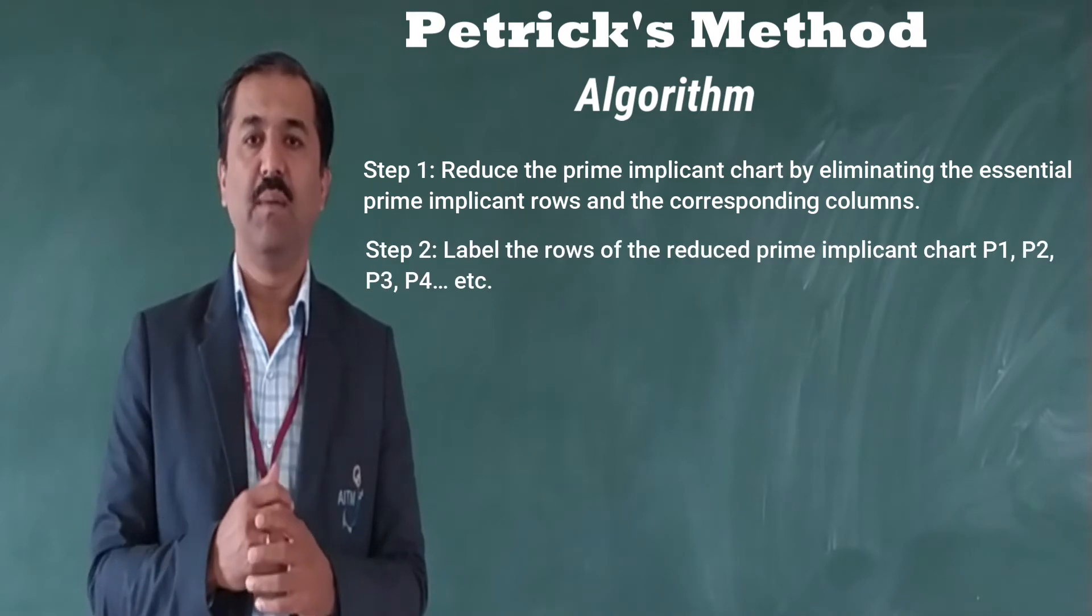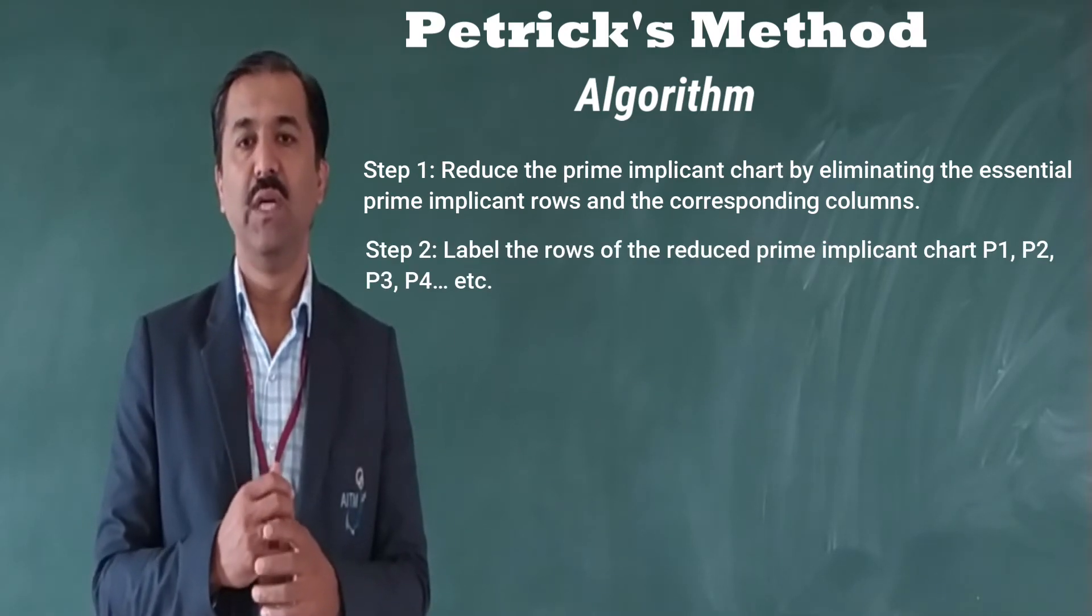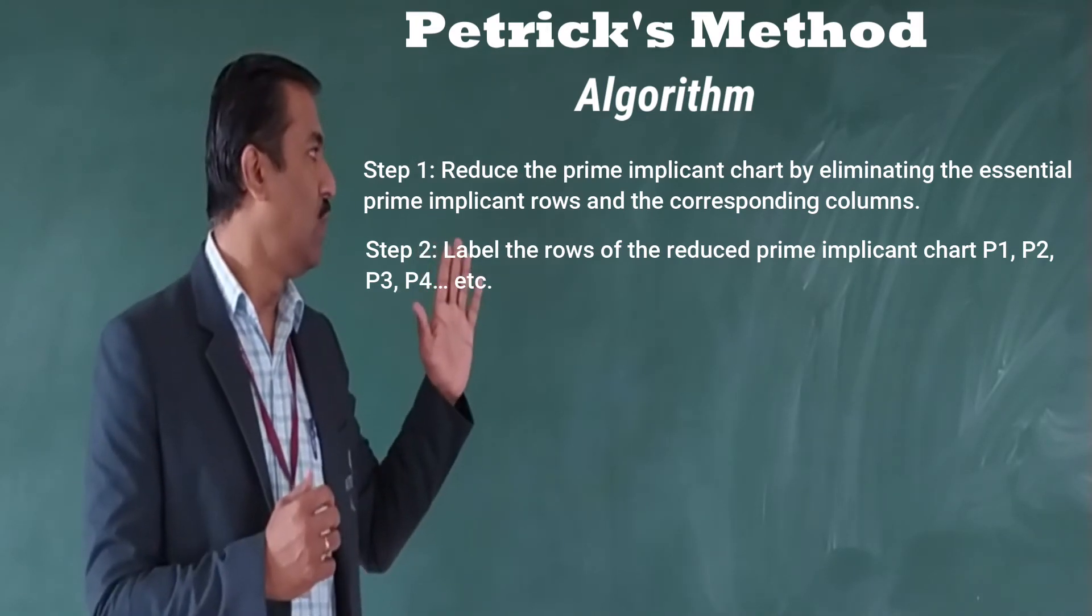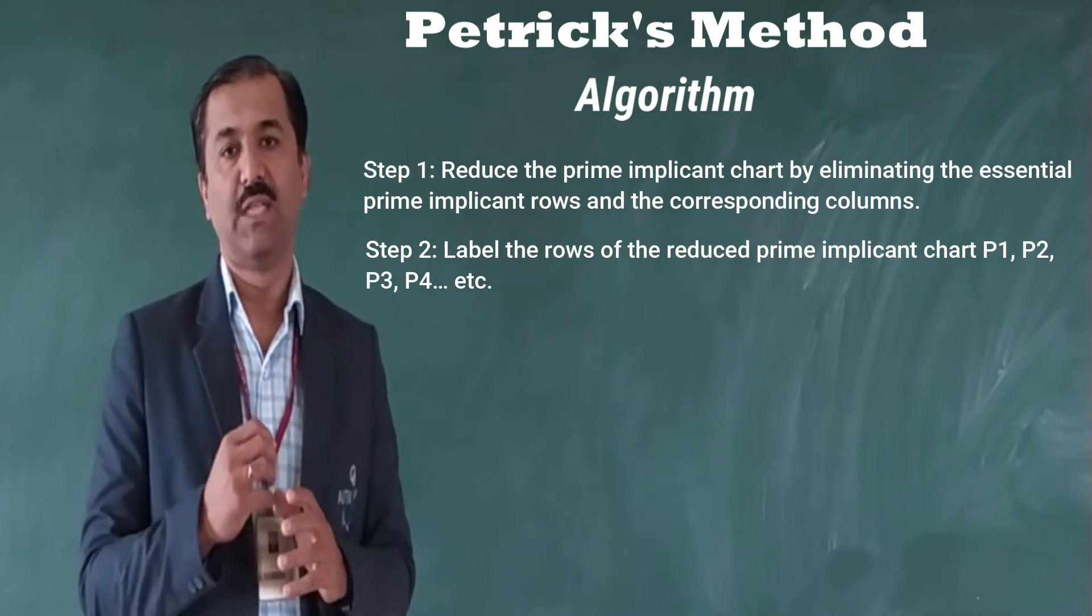In the second step we are going to label the rows of the reduced prime implicant chart like P1, P2, P3 up to Pn etc.